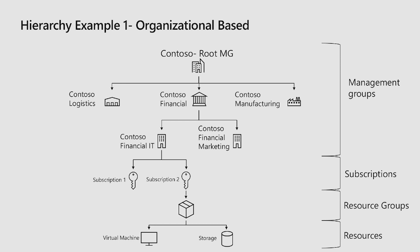In this example, there's Contoso Logistics on the left, Contoso Financial in the middle, and Contoso Manufacturing. Let's focus on Financial — we're showing the IT Department and the Marketing Department of Contoso Financial, though there could be multiple more. This is only a two-level hierarchy, but as mentioned previously, we can go up to six levels, so this can get very deep.